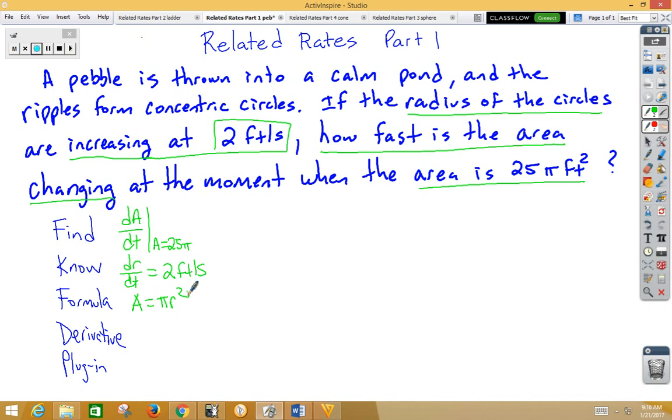Now it's time to take the derivative. So the derivative of A is dA/dt, derivative of area with respect to time. πr² would be 2πr. Now this is implicit differentiation because we have two variables going on, so when we take the derivative of r we're going to multiply by dr/dt.